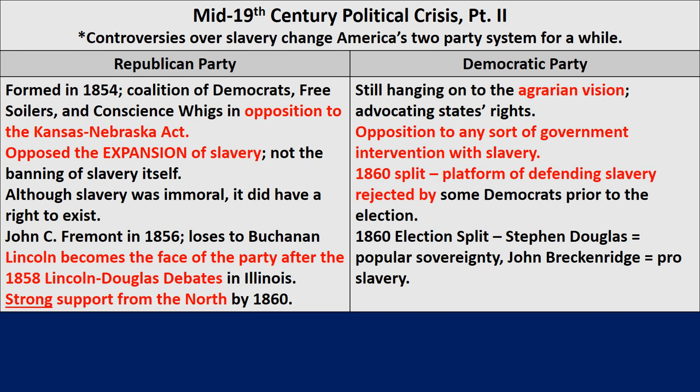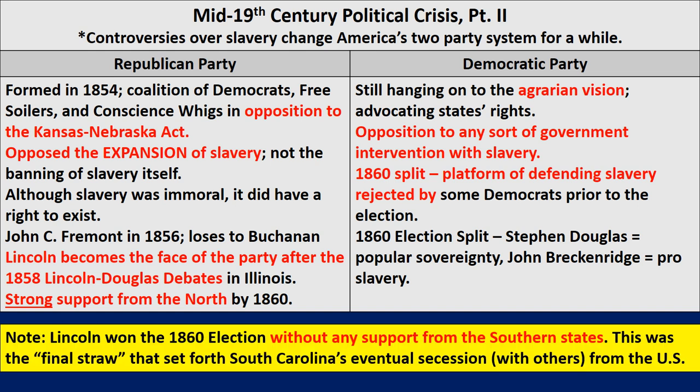In the famous election of 1860, the Democratic Party was still around, hanging on to the agrarian vision, advocating states' rights, and opposing any government intervention with slavery. By 1860, they started to split on the platform of defending slavery, which was rejected by some Democrats. Stephen Douglas ran on a campaign of popular sovereignty, while John Breckinridge was pro-slavery. This split hurt the Democrats in the 1860 election.